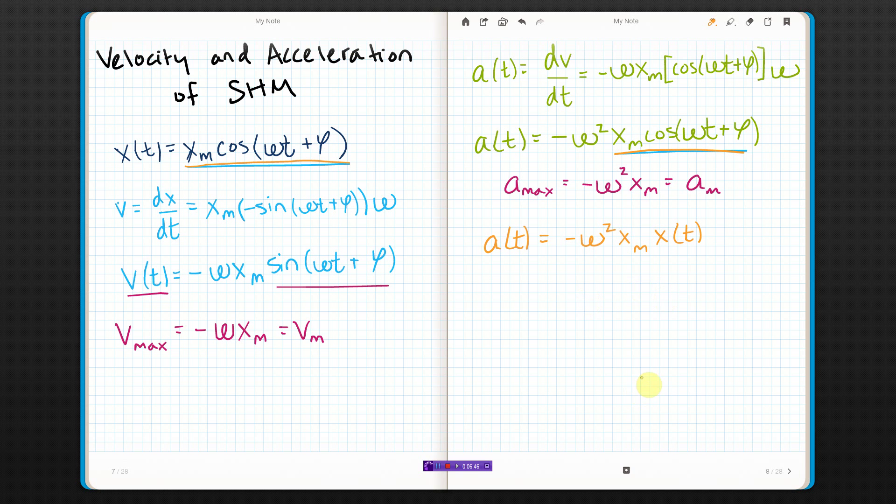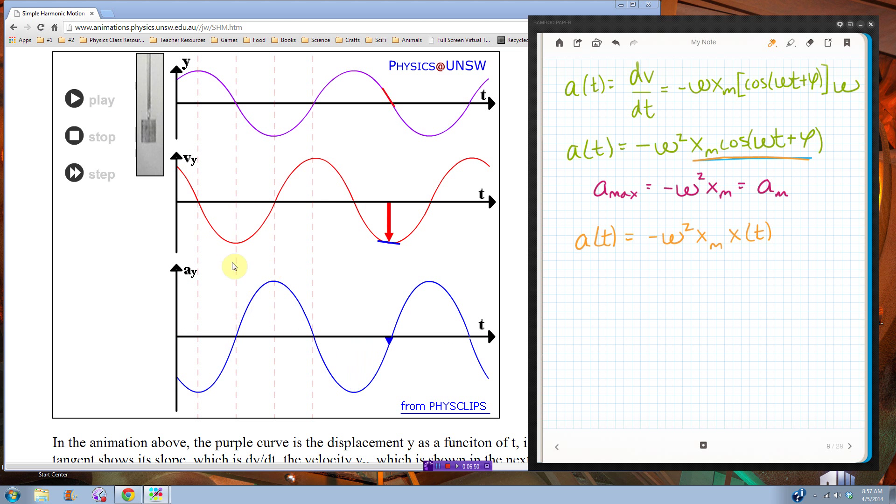And let's look real quick and then we're going to end the video. Let's look at the graph for acceleration. Notice everything's been shifted again. So if you look at velocity, whenever velocity has its largest amplitude, so like right here for instance, the acceleration is zero. And whenever the velocity is zero, the acceleration is its maximum. Just like before.